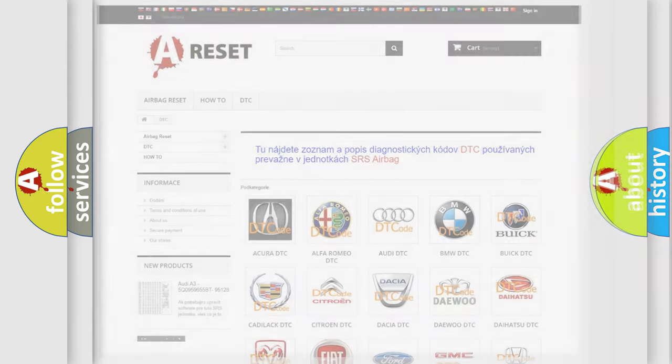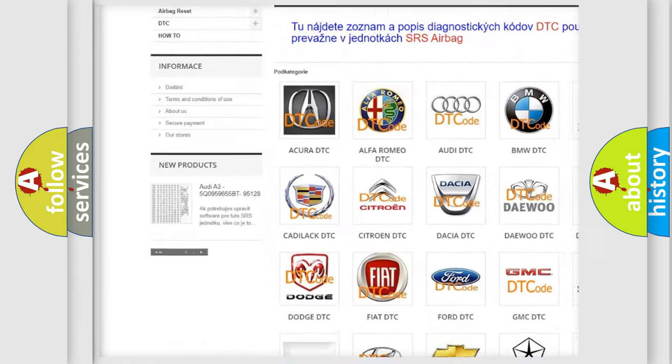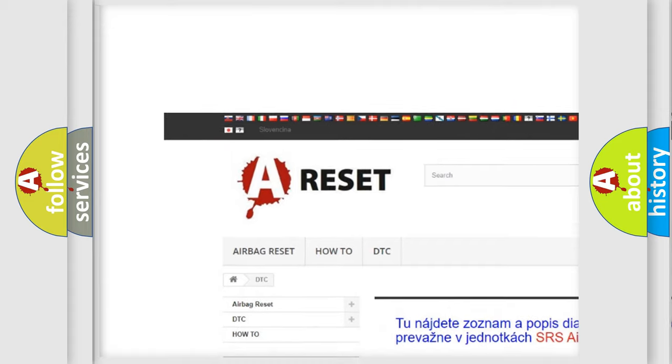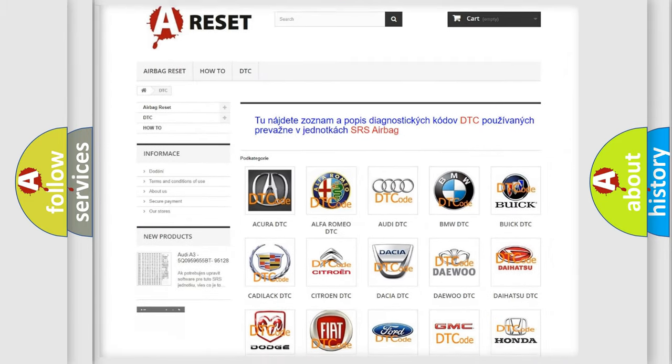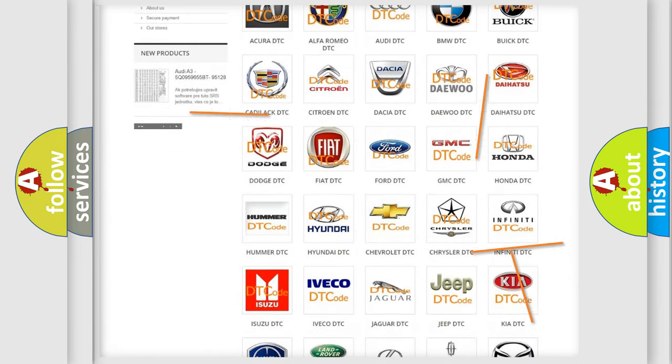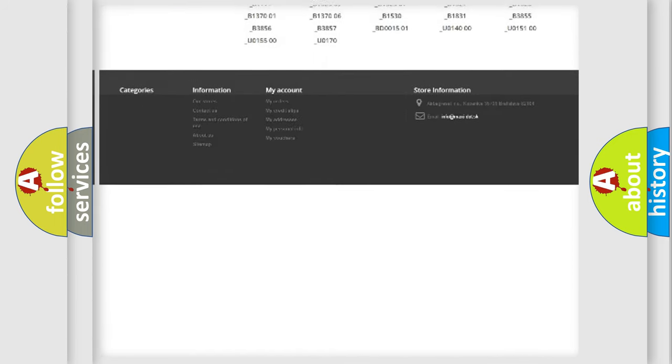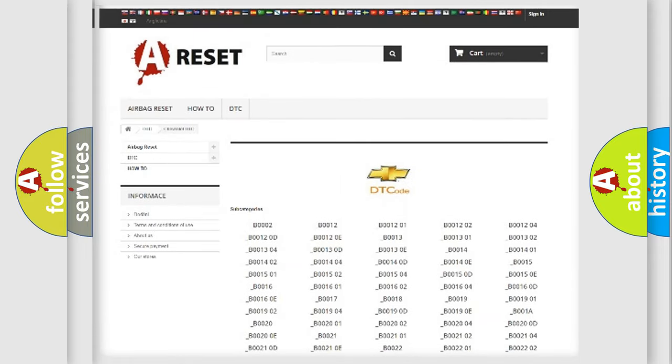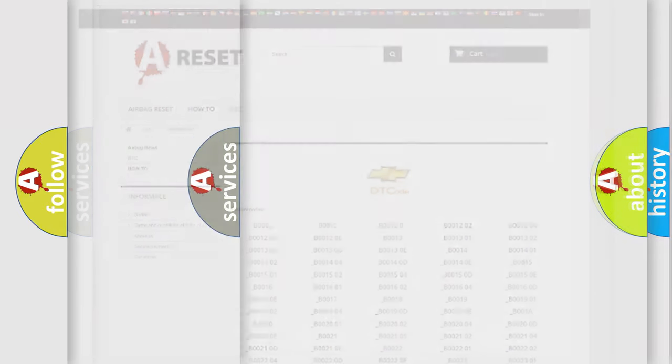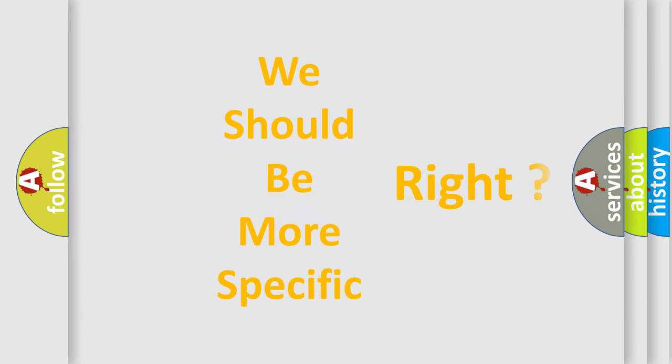Our website airbagreset.sk produces useful videos for you. You do not have to go through the OBD2 protocol anymore to know how to troubleshoot any car breakdown. You will find all the diagnostic codes that can be diagnosed in Chevrolet vehicles. Also many other useful things. The following demonstration will help you look into the world of software for car control units.